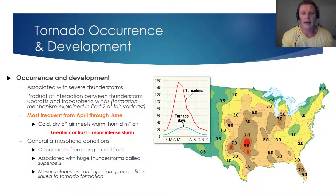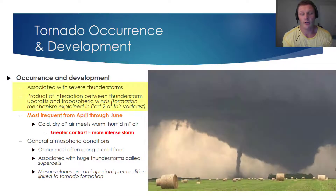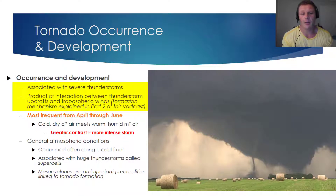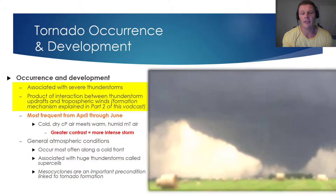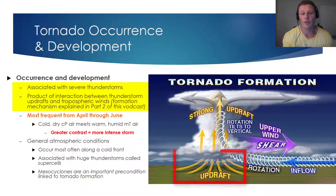I'd like to conclude this video podcast by talking about tornado occurrence and tornado development. First and foremost, tornadoes are associated with severe thunderstorms — oftentimes storms that produce high winds, heavy rainfall, and hail. In part two of the tornado vodcast, I'm going to go into detail on the tornado formation mechanism. But for now, tornadoes are a product of interaction between thunderstorm updrafts and tropospheric winds.